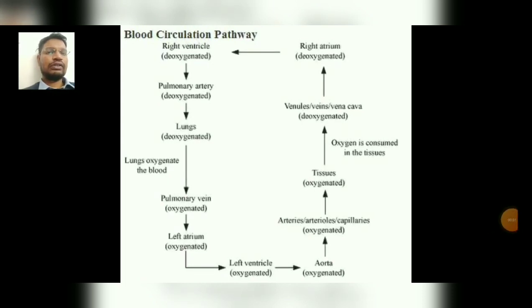The aorta is the largest artery. After the blood reaches the aorta from the left ventricle, the aorta gives rise to branches of different arteries, arterioles, and capillaries, which contain oxygenated blood.